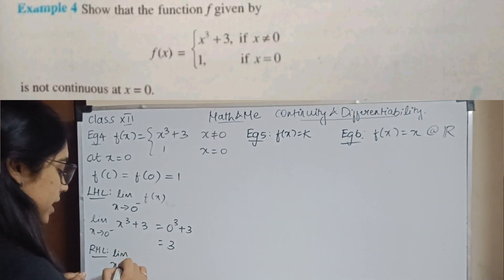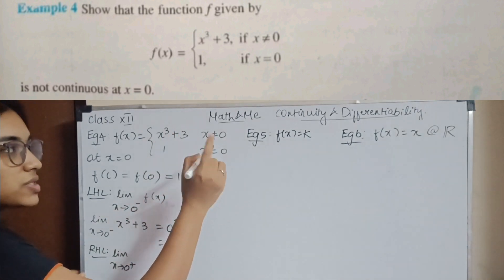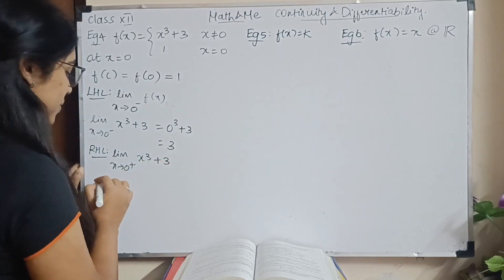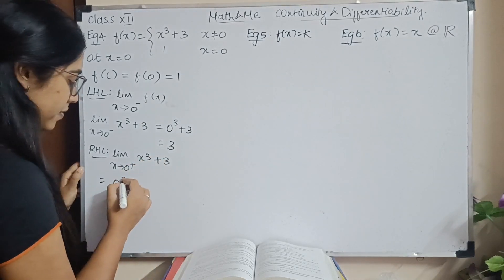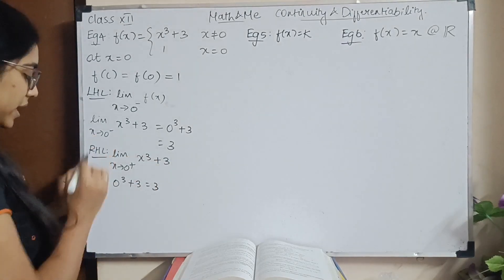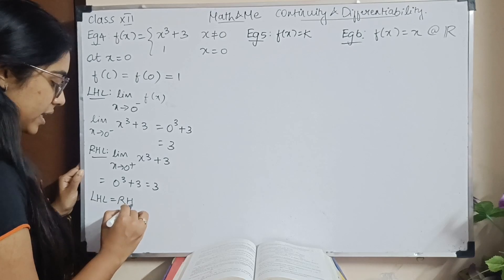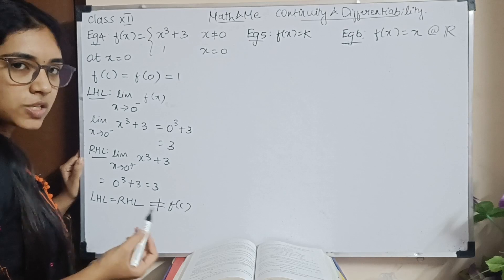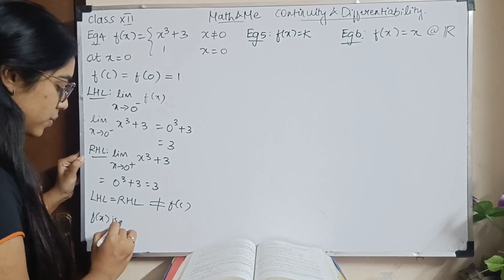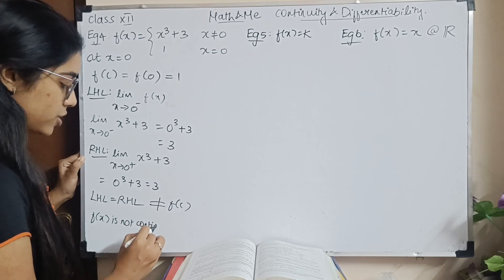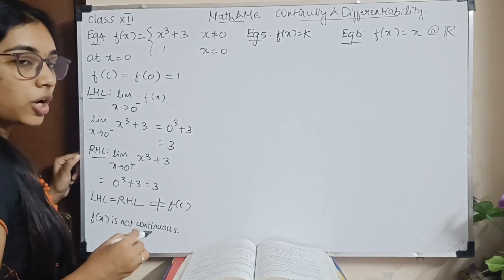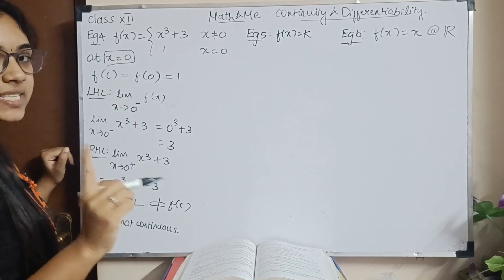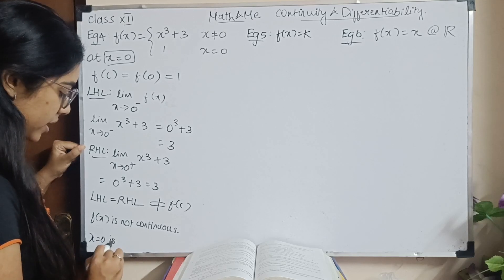The right hand limit as x tends to 0⁺: x is not equal to 0 but approaching it, so we again use x³ + 3. Substituting 0 gives 0³ + 3 = 3. So left hand limit equals right hand limit, but this is not equal to f(c) = 1. One condition is not satisfied, so the function is not continuous. The point of discontinuity is x = 0.